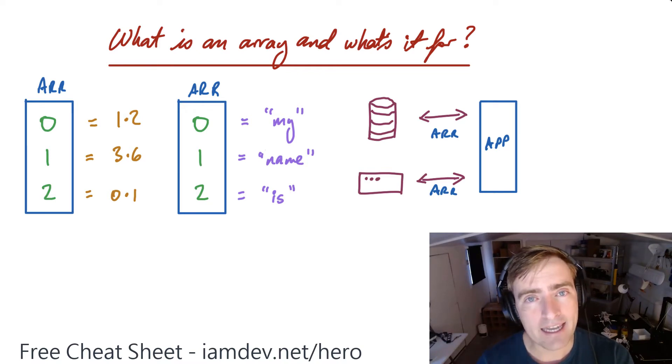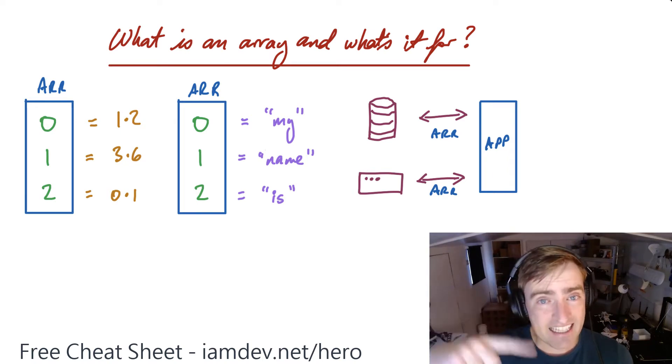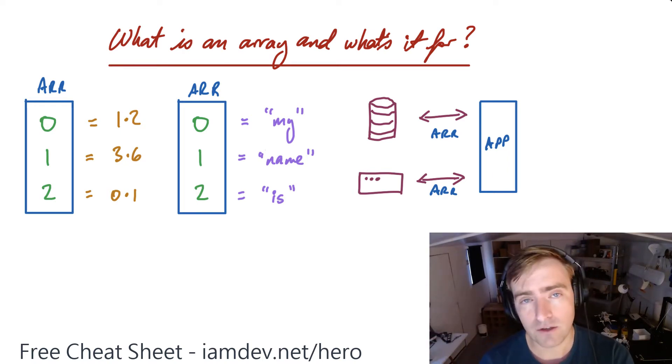Usually if you hear the word 'array' it's ordered, so 0 is the first element, 1, 2, and it stays in that order, unless you manually change it yourself and put it into a new array.